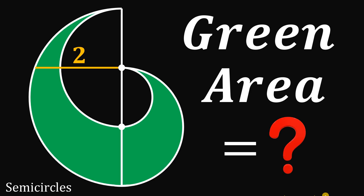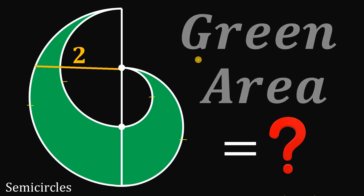Can you solve this geometry challenge? Given this figure consisting of semicircles — we have one semicircle, the second semicircle, the third semicircle, and the fourth semicircle. This segment right over here must be equal to two units. Our goal in this question is to find the area of the green region.